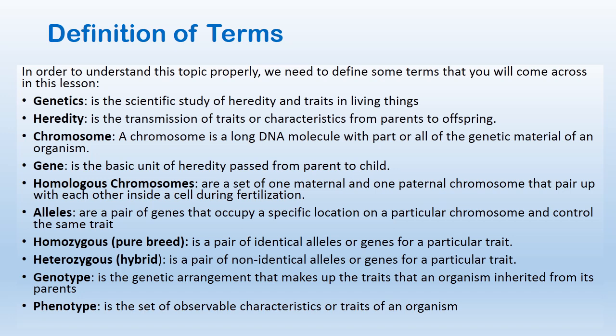The next term is heredity. Heredity is the transmission of traits or characteristics from parents to offspring. Now let's look at the word chromosome. The chromosome is a long DNA molecule with parts or all of the genetic material of an organism. A gene is the basic unit of heredity passed from parent to offspring. Homologous chromosomes are a set of one maternal and one paternal chromosome that pair up with each other inside the cell during fertilization. Alleles are a pair of genes that occupy a specific location on a particular chromosome and control the same trait.